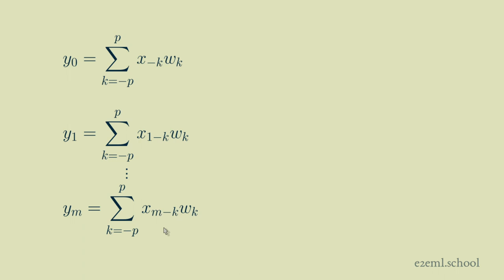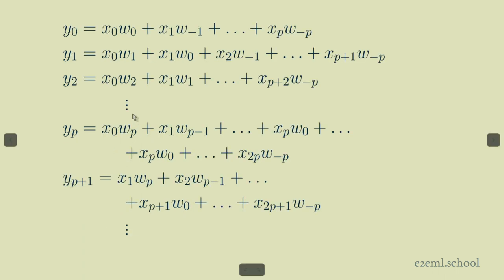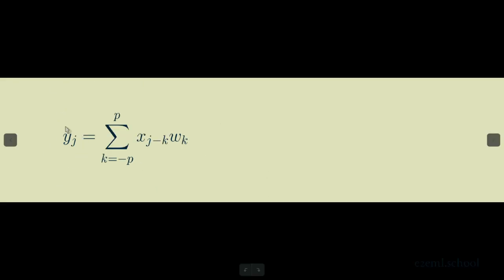And if we want to, we can instead of explicitly counting through all the positions of our signal, we can use the index j and just say for any position j between 0 and m minus 1, we can use this expression. So y sub j is equal to the sum of x sub j minus k times w sub k. And in each of those summations, k goes from minus p to p.